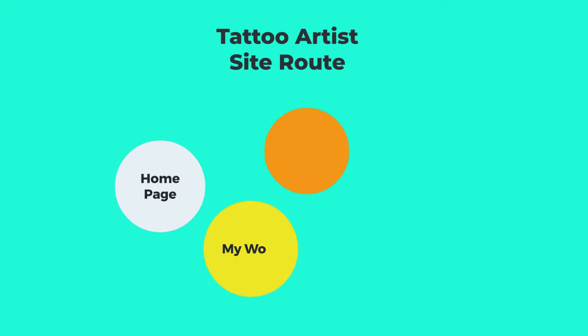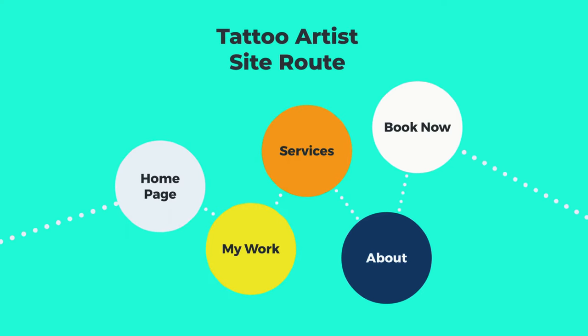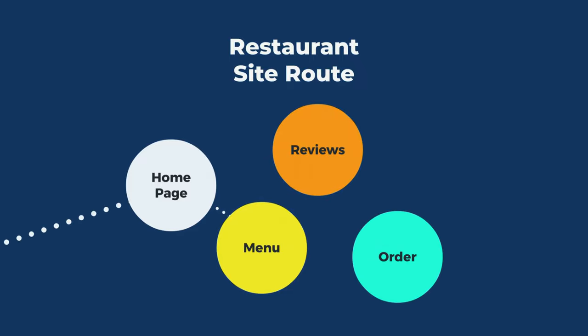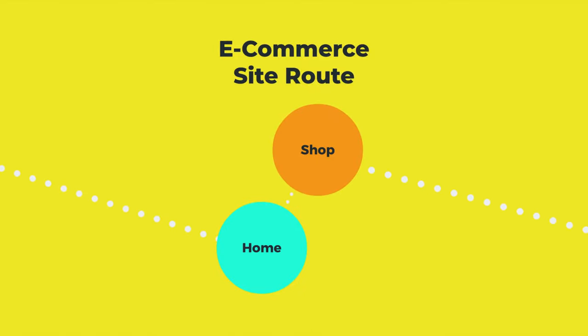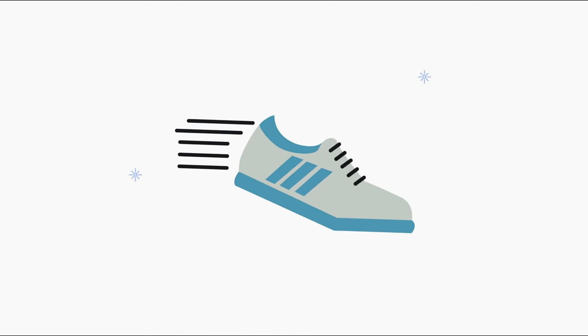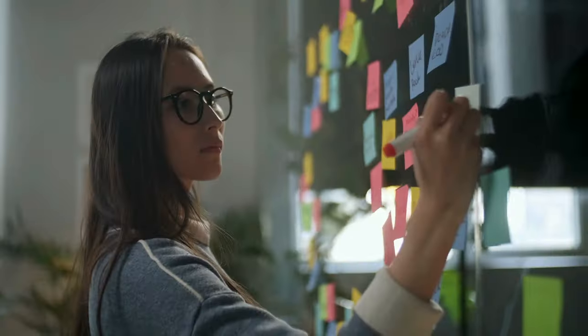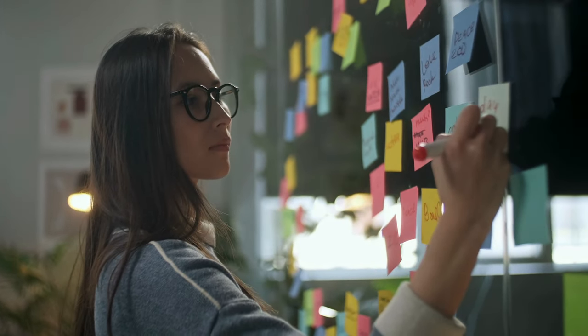Think about what things visitors on your site need to know in order to fulfill your primary goal. If you're a tattoo artist, people will probably want to see your work, look at your prices, and learn a little about you before booking an appointment. The site route for something like this might look like: Home → My Work → Services → About → Book Now. Some site routes might be shorter — a restaurant's route could be: Home → Menu → Reviews → Order. An e-commerce website might be even shorter: Home → Shop. Write down all the possible combinations of your site route.